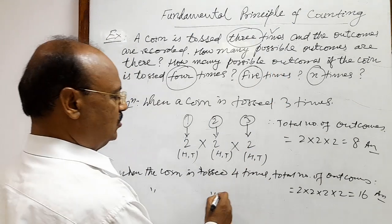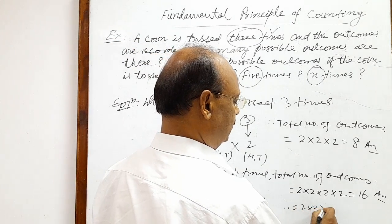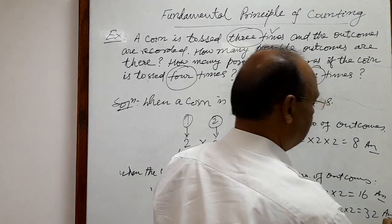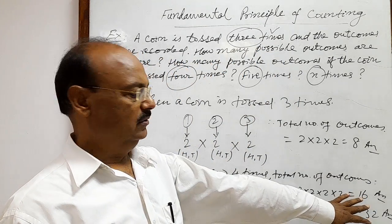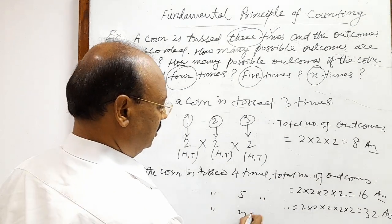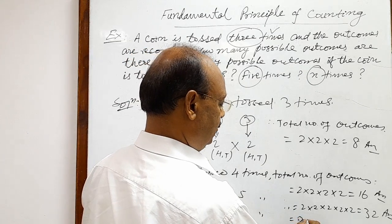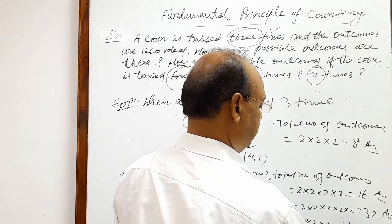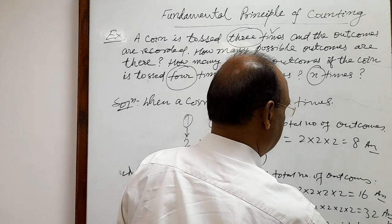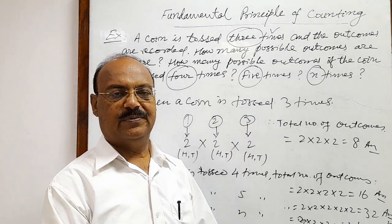Similarly, when the coin is tossed five times, the total number of outcomes will be two into two into two into two into two, which is 32 possible outcomes. And when the coin is tossed n times, the total number will be two into two into two, n times — so this is two to the power n. This is the answer. This is a very interesting question from the topic fundamental principle of counting.